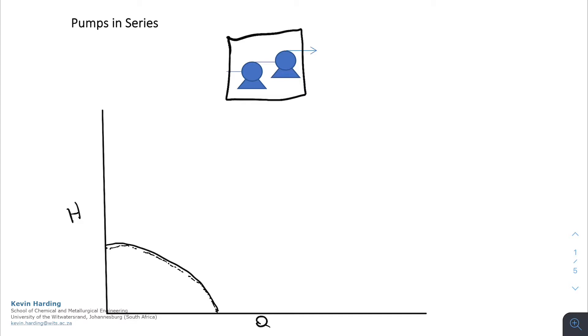So at any given point, so let's just start at a velocity of zero, at any given point the velocity will not change, but the pressure or the head is going to change by a factor of two. So that means that the distance between the zero point and the first pump curve and the first pump curve and the system for both is going to be identical, so the head is going to double.